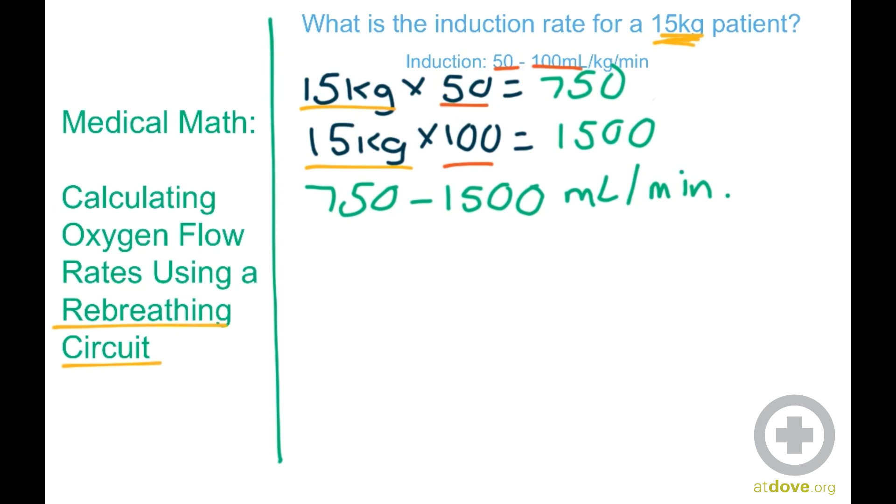So to figure out the low range, we're going to take 750, divide it by 1,000, and that gives us 0.75. And to calculate the high end of this formula, we're going to take 1,500 and divide that by 1,000, and that gives us 1.5.